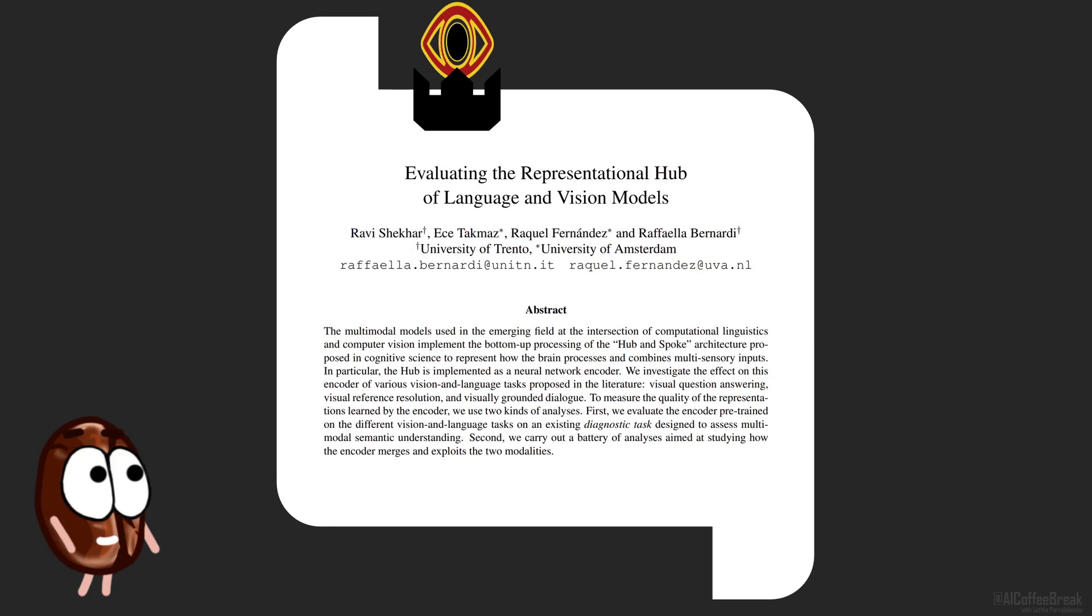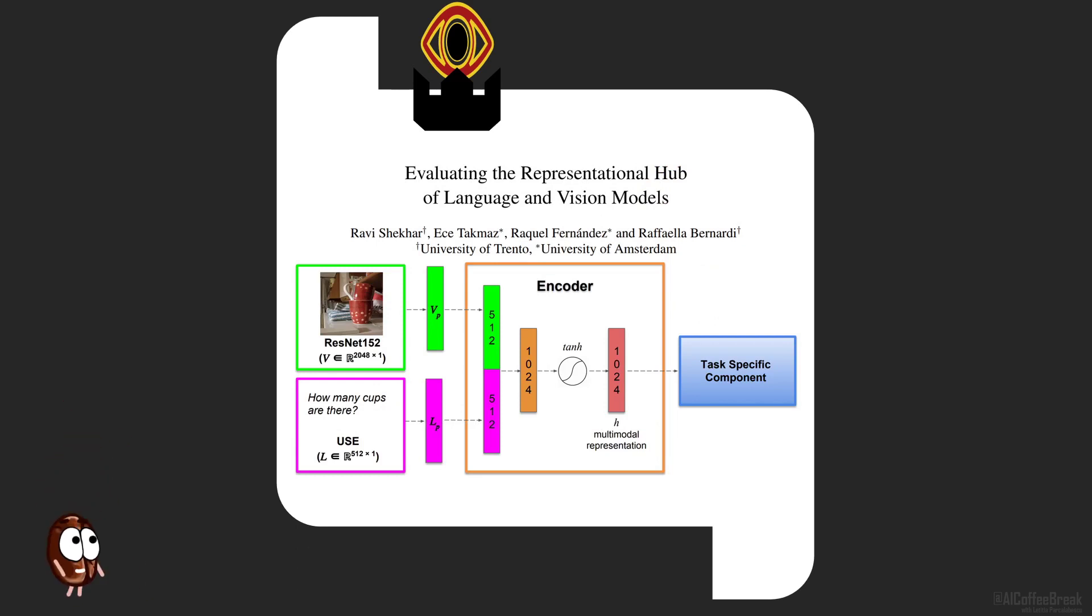The authors take a very common multimodal architecture from 2019, where features are extracted from vision and language respectively by two different branches. Then these features representing different modalities are concatenated, further transformed by a linear layer, followed by non-linear activation, and ta-da! This is the multimodal representation containing information from both modalities. With this representation, further task-specific layers enable the model to predict the answer for the task, like the answer to how many cups are there in the image. And the answer would be here too.